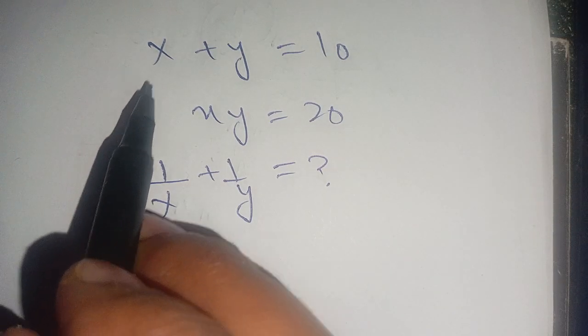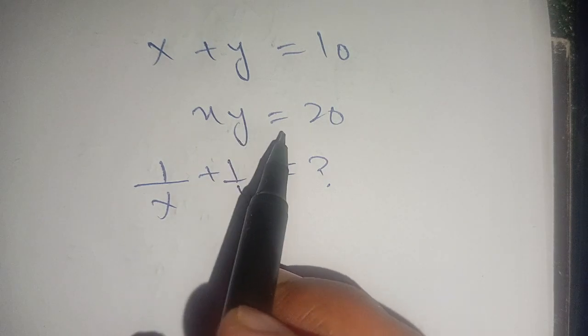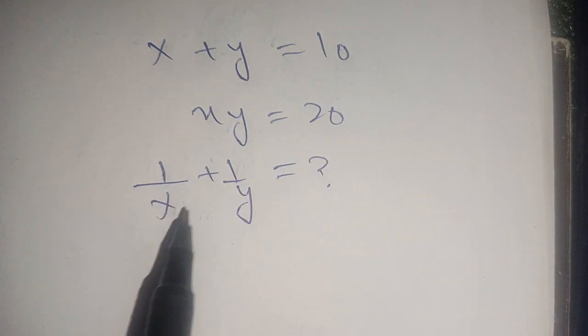In today's video, we are going to solve this problem. If x plus y is equal to 10, x times y is equal to 20, and we have to find the value of 1 divided by x plus 1 divided by y.